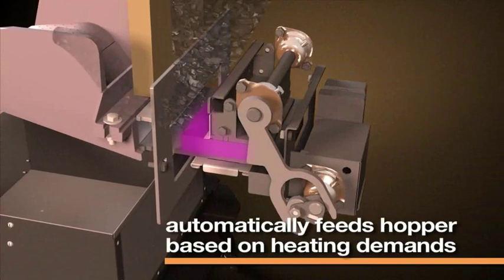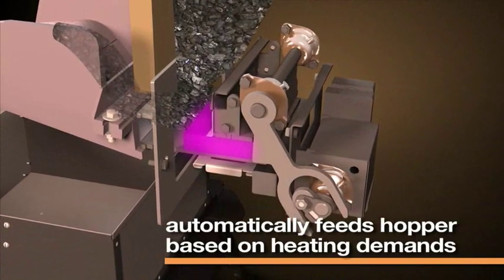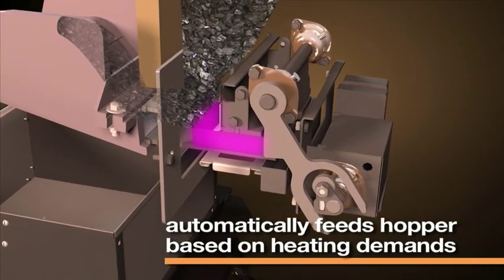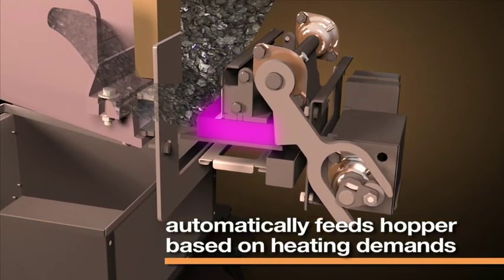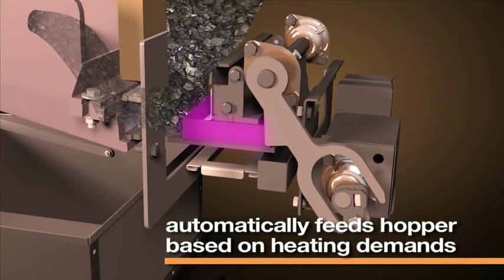Coal is automatically fed from the bottom of the hopper through the rectangular tunnel by the pusher block. The back and forth movement of the pusher block is automatically timed based on heating demands.